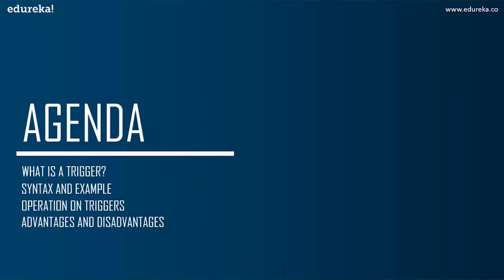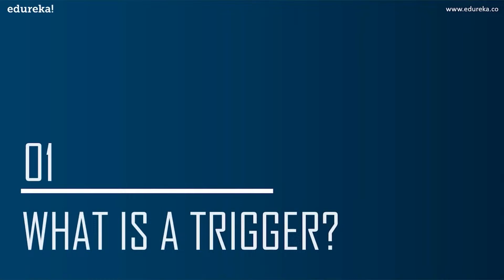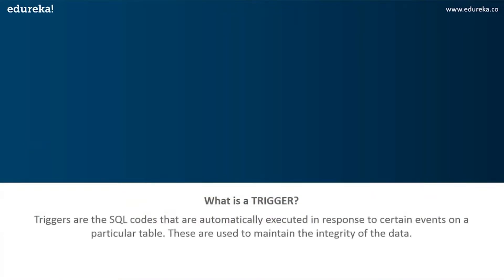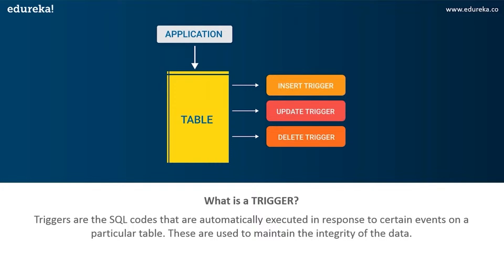We'll wrap up this session by discussing its advantages and disadvantages. I hope the agenda is clear. Let's get started. The first topic in today's discussion is: what are triggers? Triggers are SQL code that are automatically executed in response to certain events on a particular table. These are used to maintain the integrity of the data in a given table. A trigger in SQL works similar to a real-world trigger.